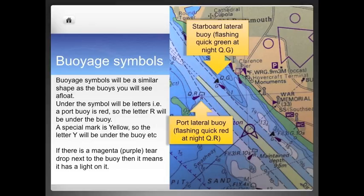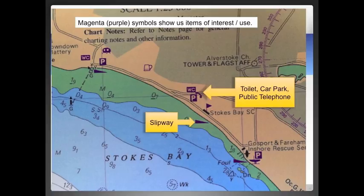If it has a magenta teardrop underneath, it simply means it has a light on it. Any symbol that's in a magenta or purple colour is generally something of interest or information to us. As an example shown in this image, the little triangle shape is a slipway, WC for toilet, P for parking, the little telephone means there's a public telephone there, and so on.